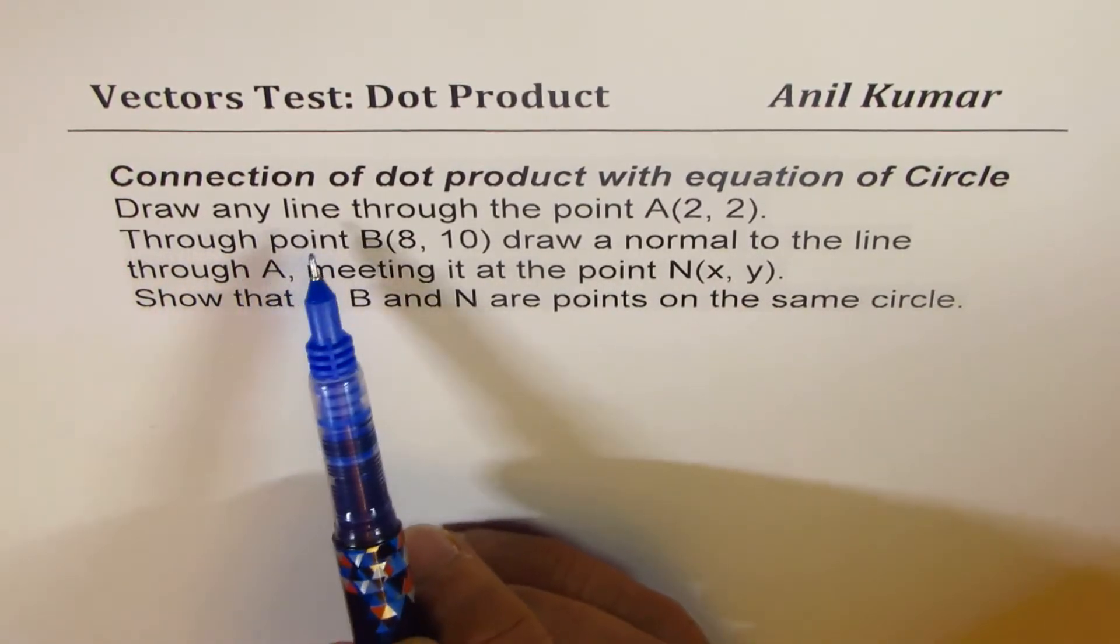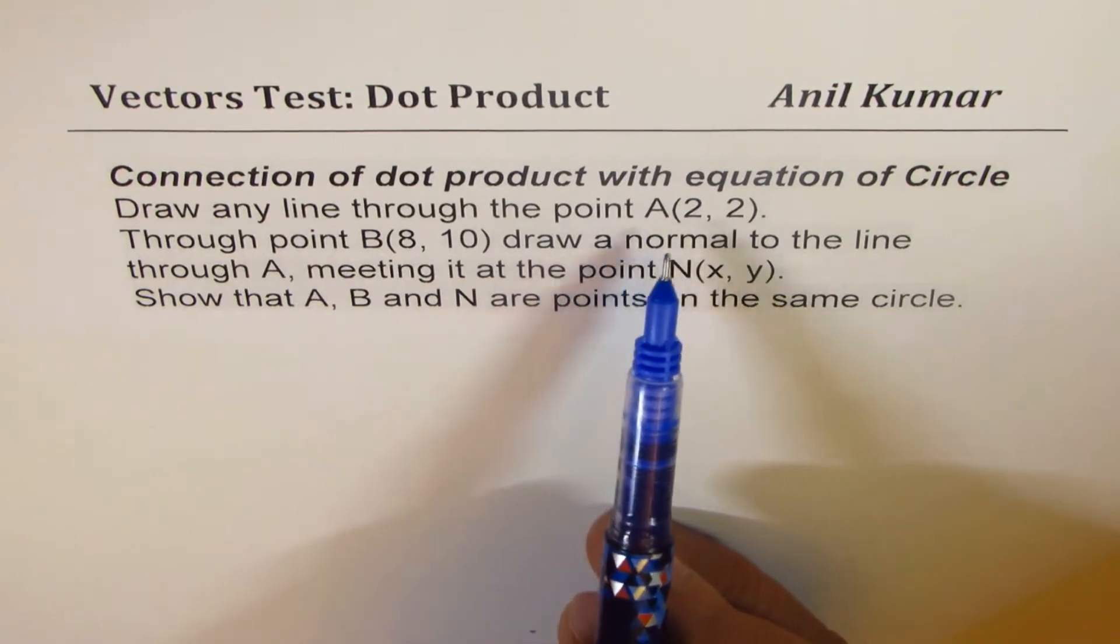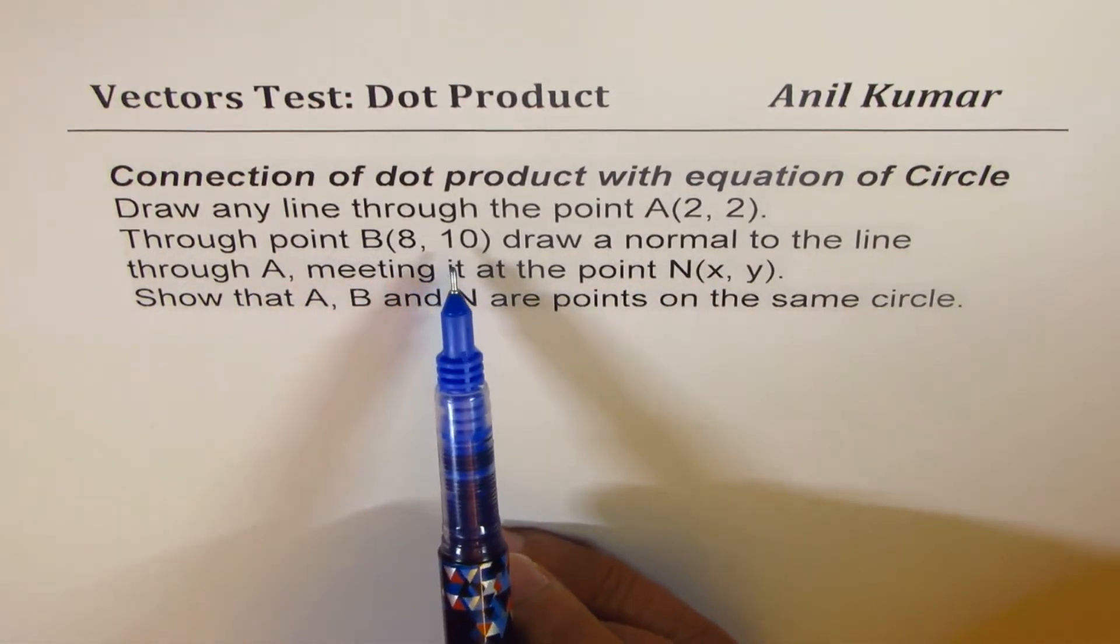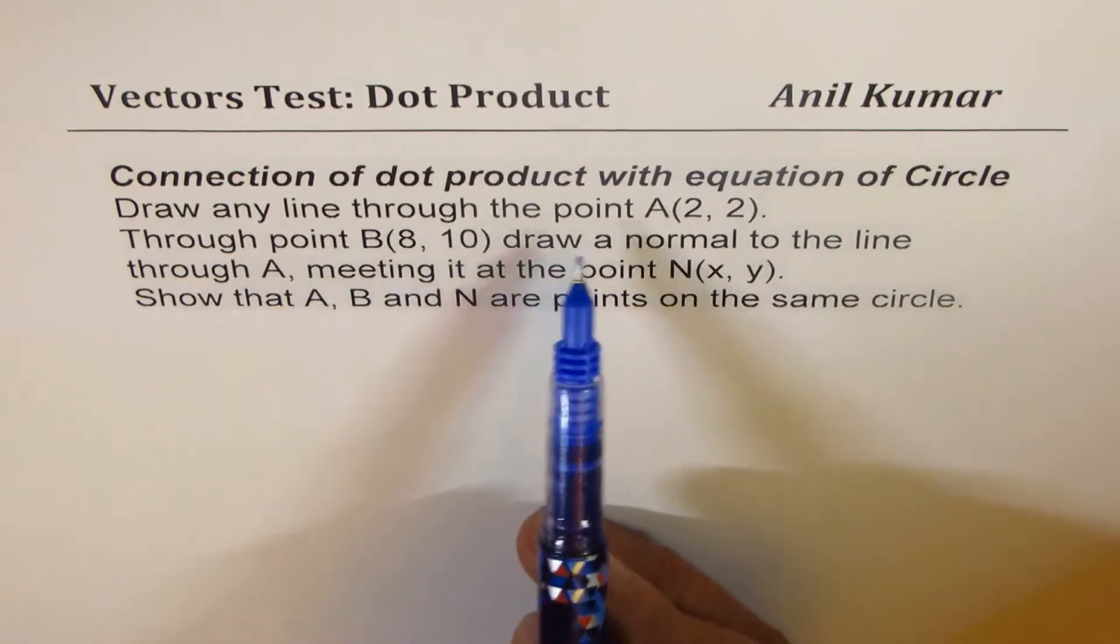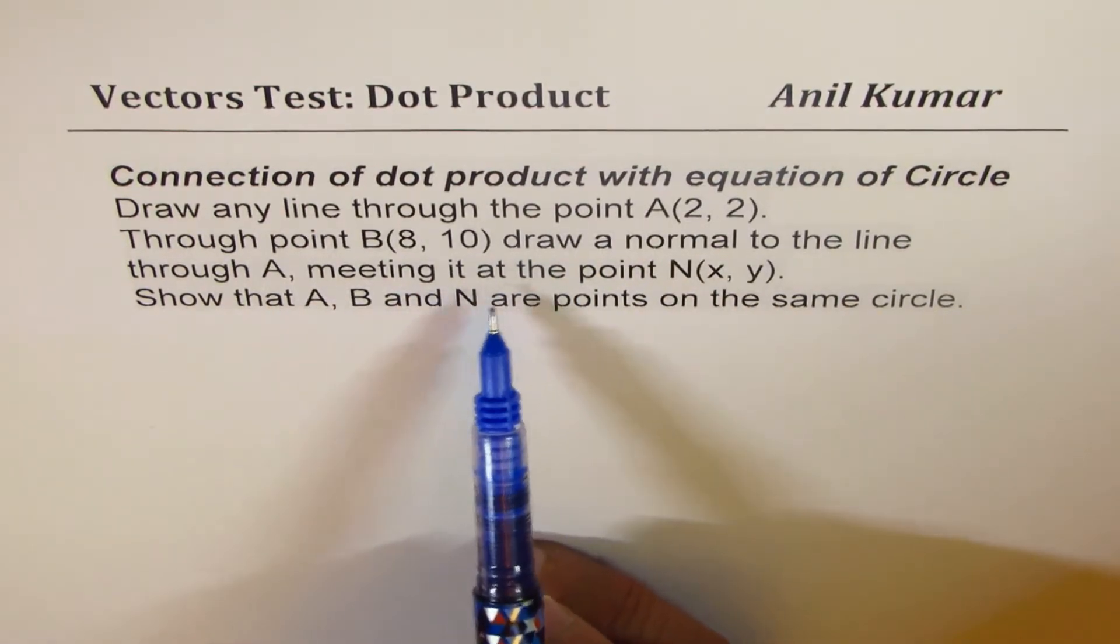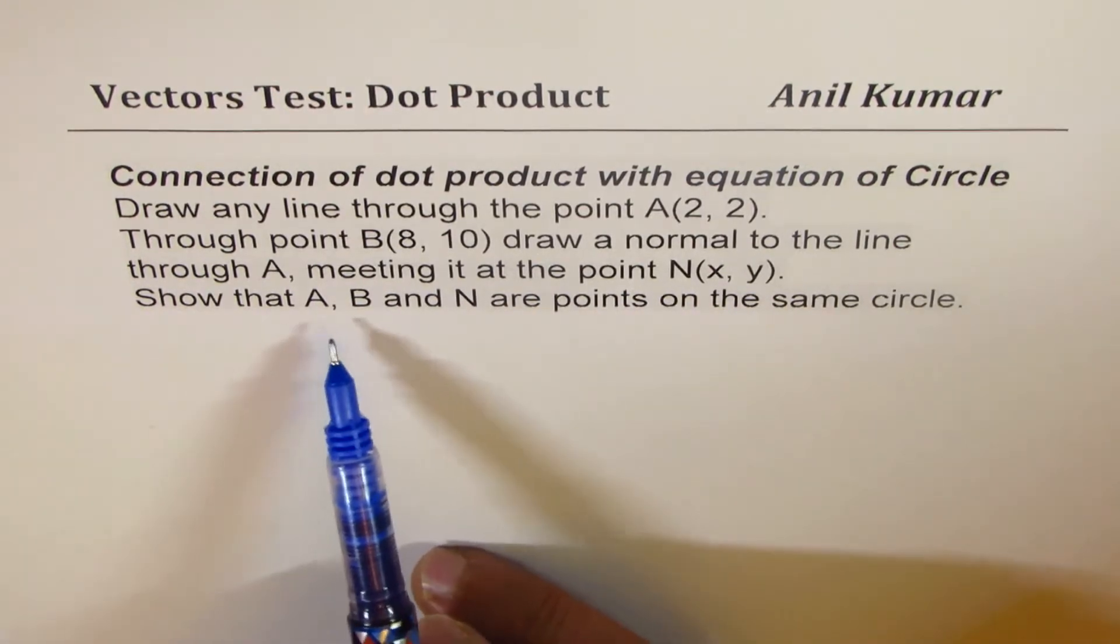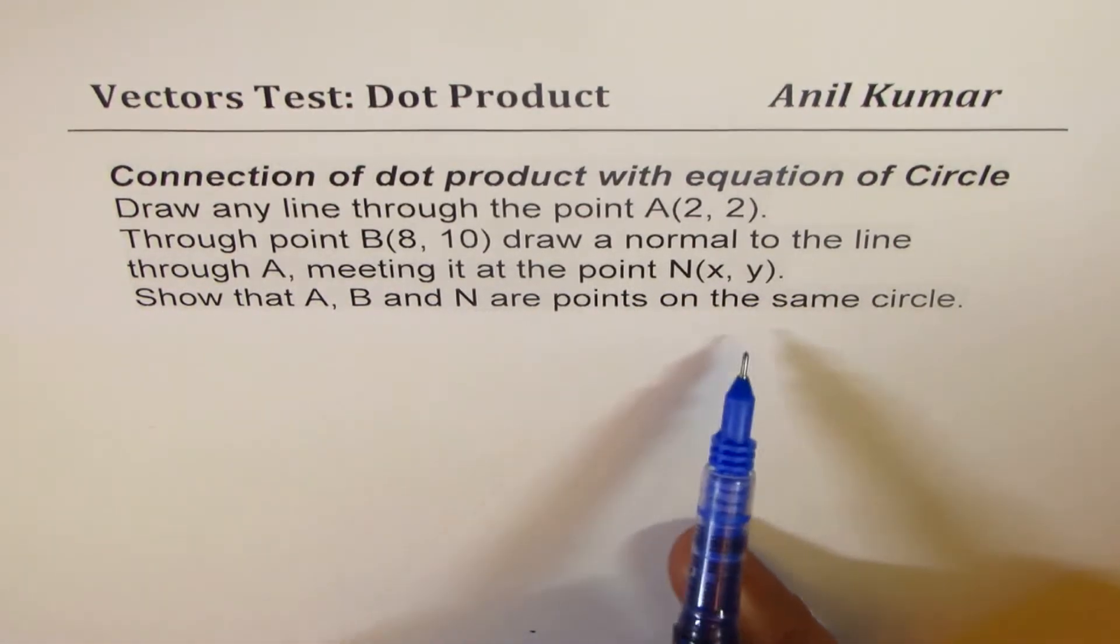The question which will help us understand is right here. It says draw any line through the point A(2,2). Through the point B(8,10), draw a normal to the line through A, meeting it at the point N(x,y). Show that A, B, and N are points on the same circle.